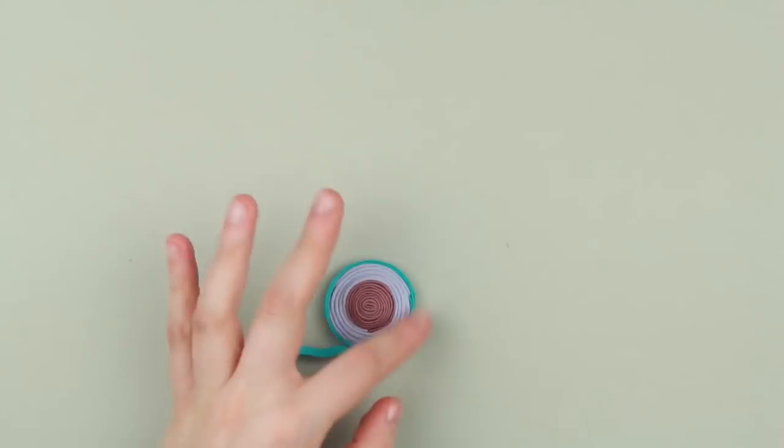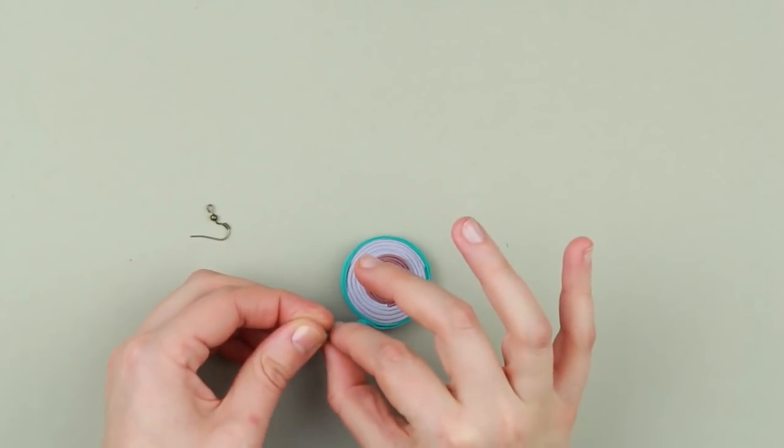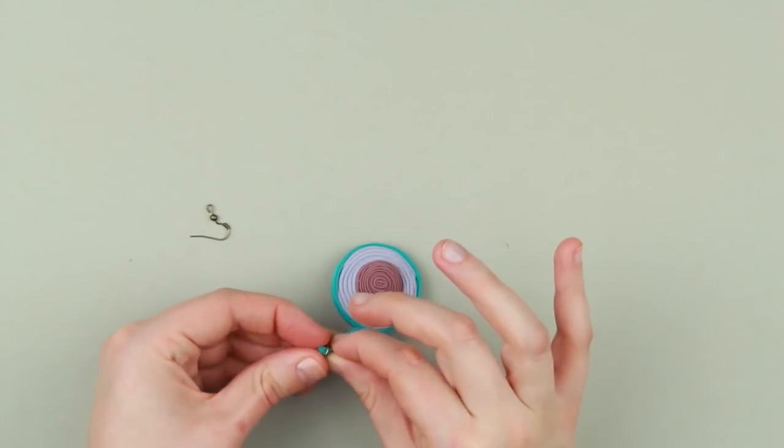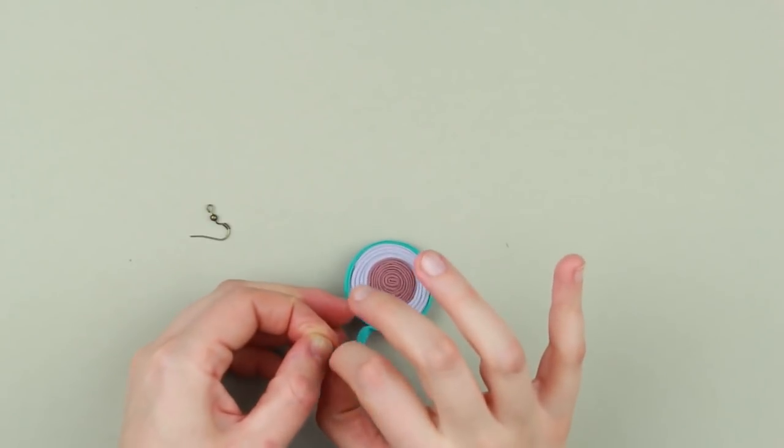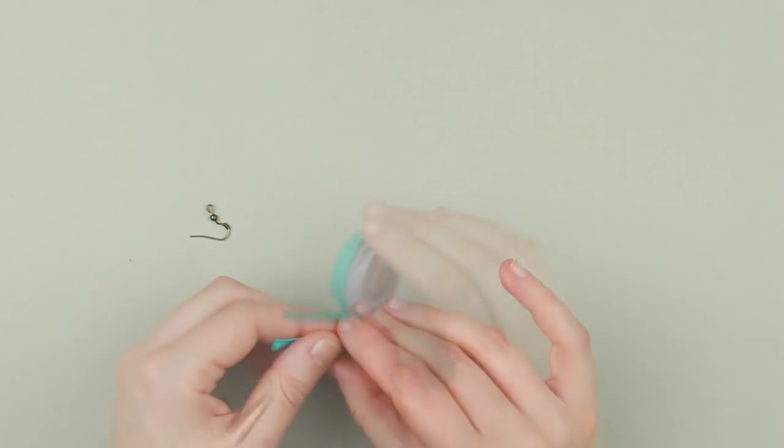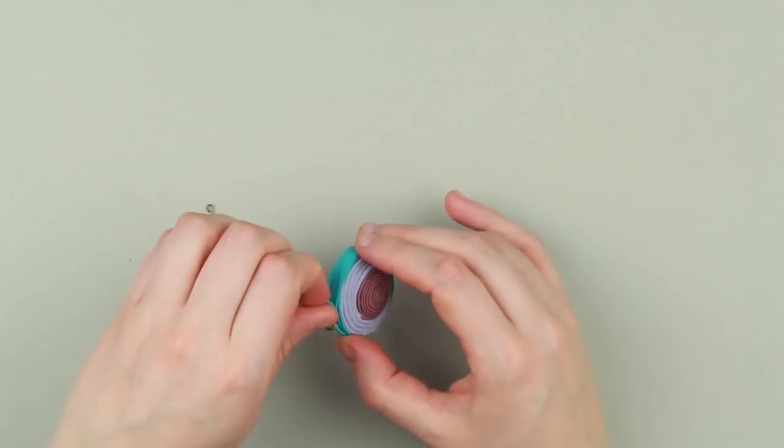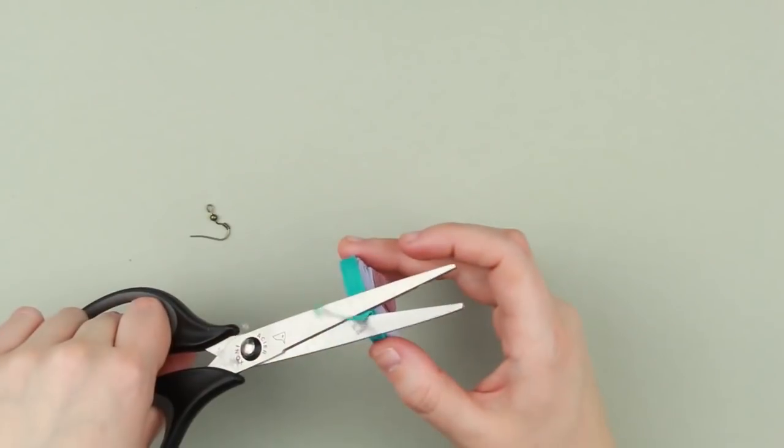Add a turquoise detail. Pass the end through a ring. Fasten with hot glue. Cut off the excess.